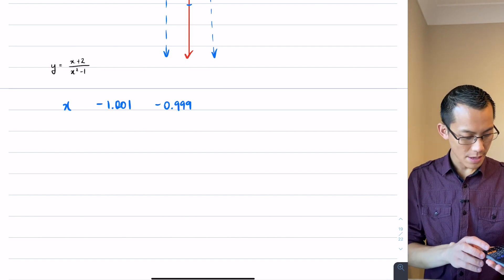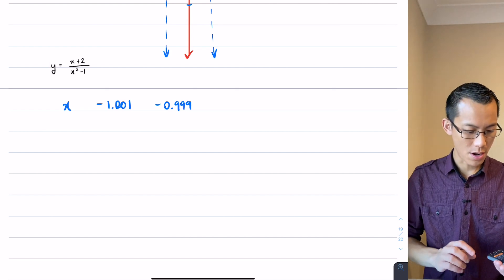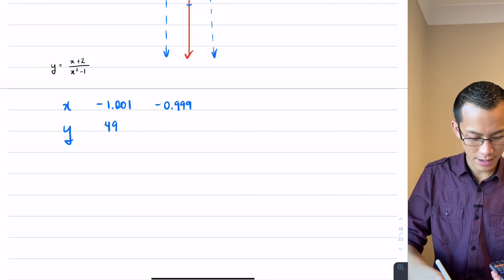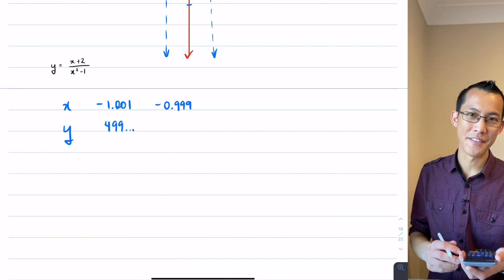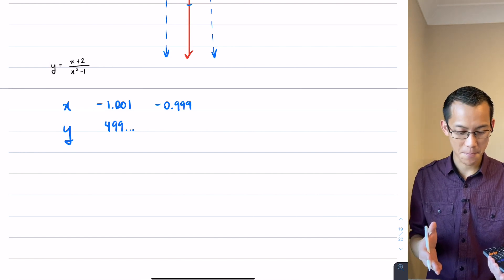And what I get from my y value is 499 and some other values of decimal values. Okay, in other words, this is a very large number.